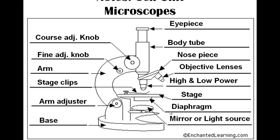Mirror and light source: this older microscope has a mirror, but most modern ones have a built-in light source, which means you'll need an electric outlet. The light comes from directly underneath, goes right through the diaphragm straight up, making a nice clean path for the light.